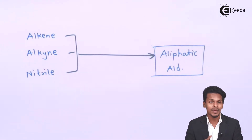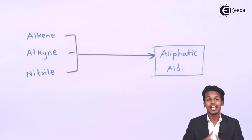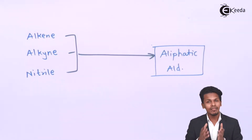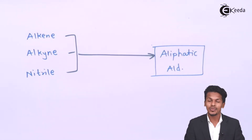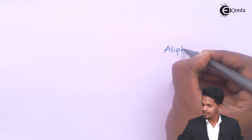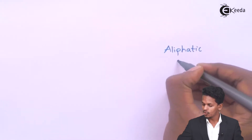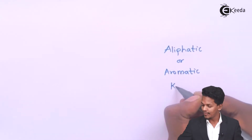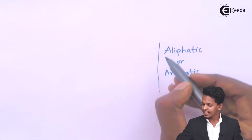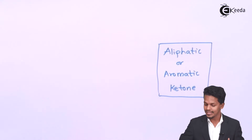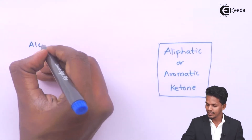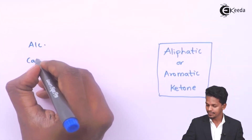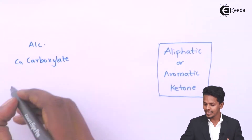By using these chemicals we can prepare aliphatic aldehydes specifically. Now let us move on to how we can prepare ketones. Ketones can also be aliphatic or aromatic. For preparing both aromatic and aliphatic ketones, we can use alcohols, calcium carboxylates, and acid chlorides.